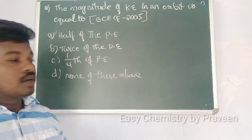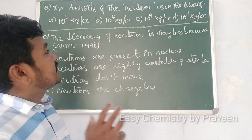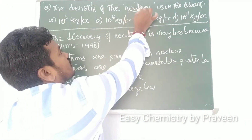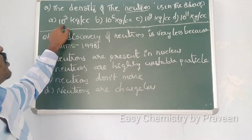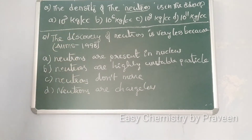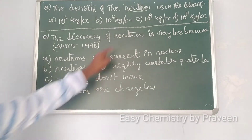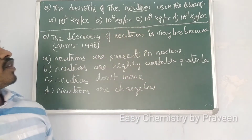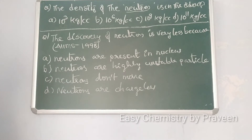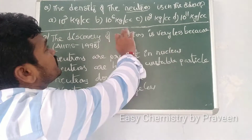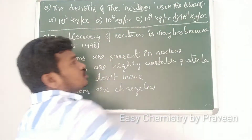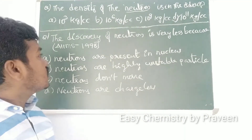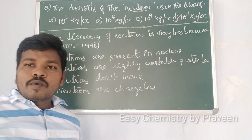The next question: the density of the neutron is in the order of — options: 10^3 kg/cc, 10^6 kg/cc, 10^9 kg/cc, or 10^11 kg/cc. The density of neutrons is 10^11 kg/cc.